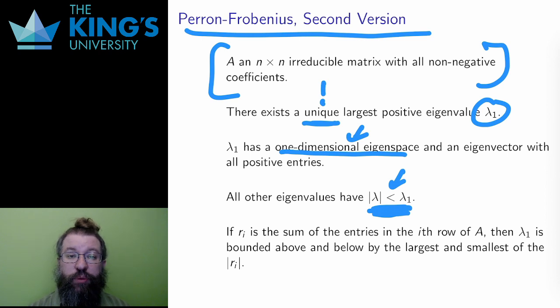For dynamical systems with irreducible non-negative matrices, the long-term behavior is really controlled and understood by this unique largest positive eigenvalue and its corresponding eigenvector. And to understand these systems, we're just going to calculate and interpret these eigenvalues and eigenvectors.